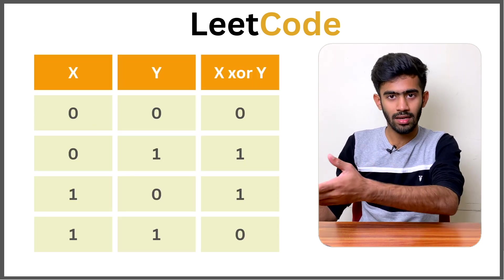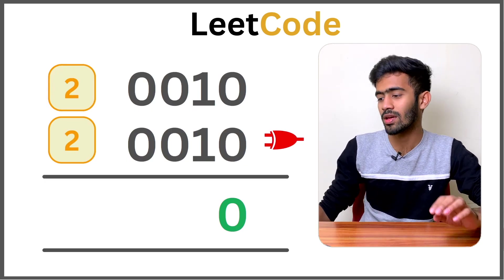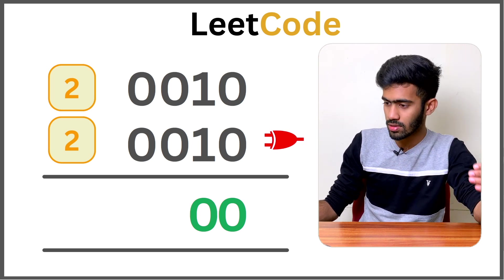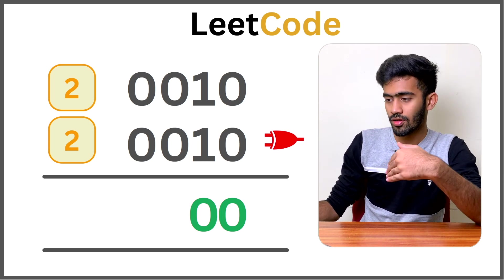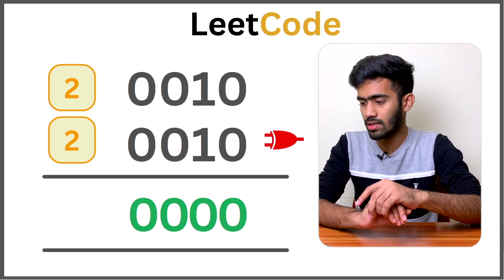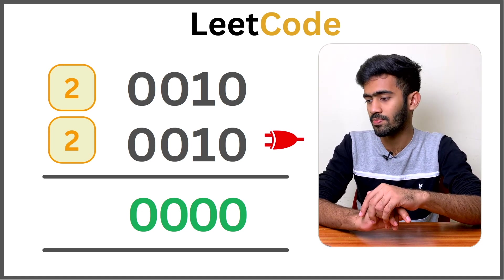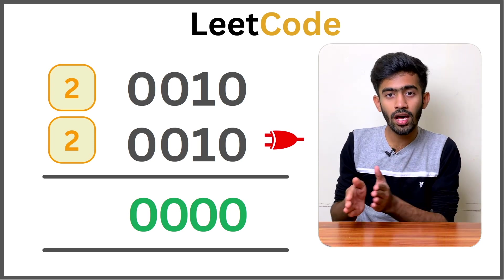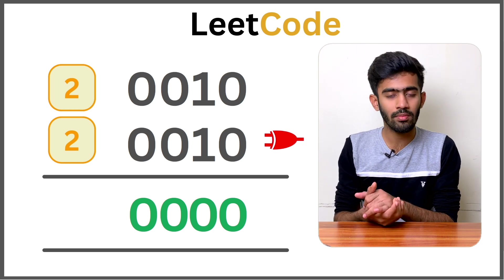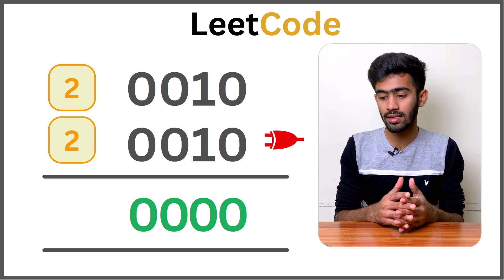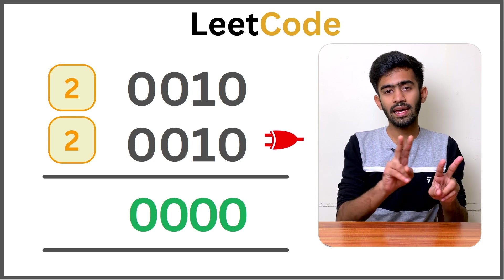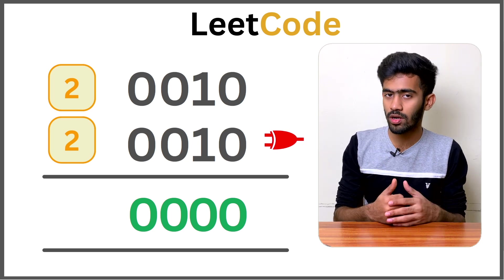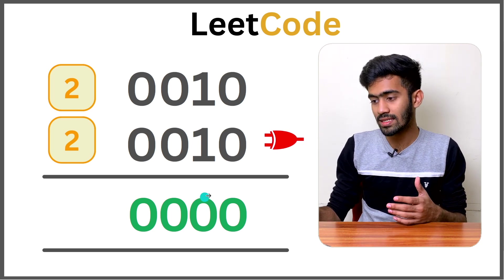If we look at all 4 bits, four same-input pairs all give 0. The answer is 0. So if we look at 2 XOR 2, 3 XOR 3, 5 XOR 5 — any number XORed with itself gives 0, because all bits cancel out to 0. That is the key property of XOR we will use.